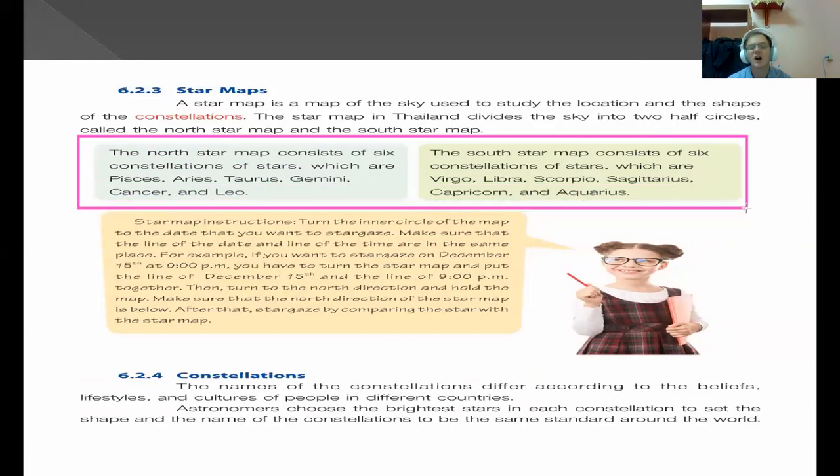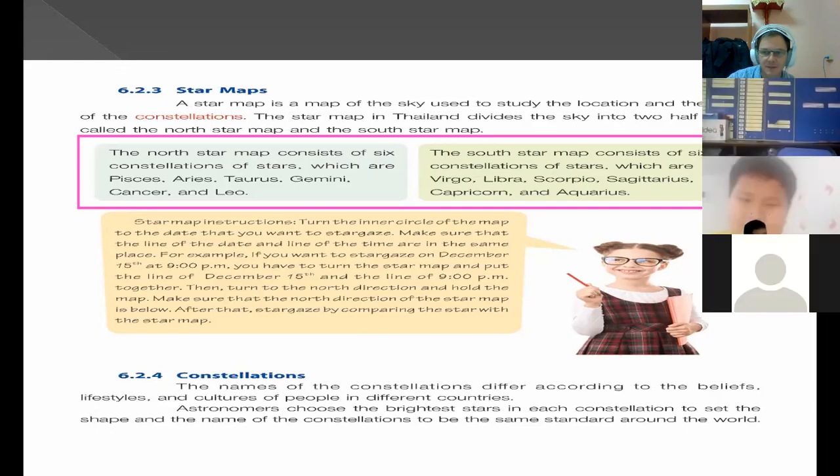So the star map is a map of the sky used to study the location and the shape of the constellations. The star map in Thailand divides the sky into two half circles called the north star map and the south star map. So the north star map consists of six constellations of stars, which are Pisces, Aries, Taurus, Gemini, Cancer, and Leo. The south star map consists of six constellations of stars, which are Virgo, Libra, Scorpio, Sagittarius, Capricorn, and Aquarius.